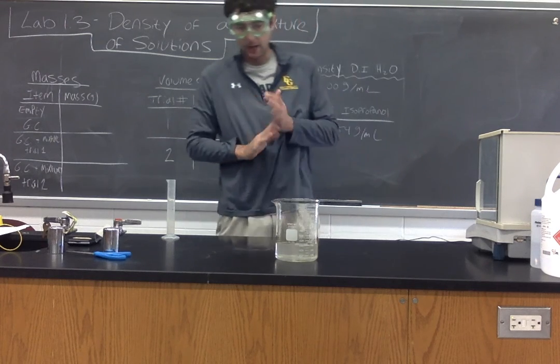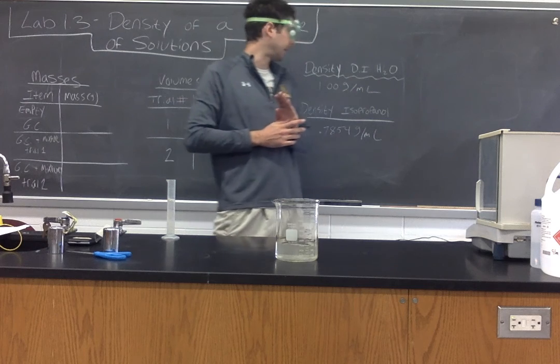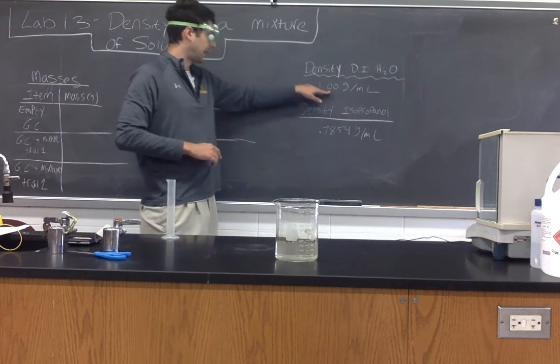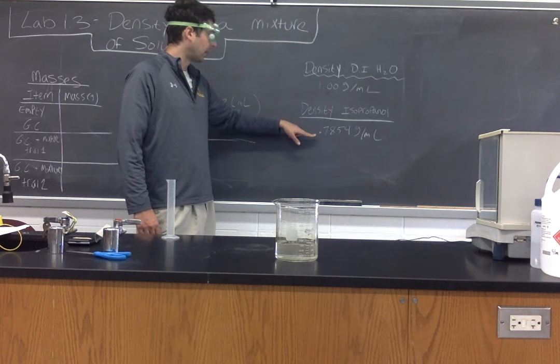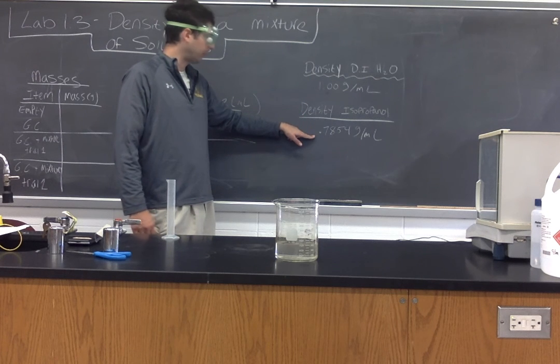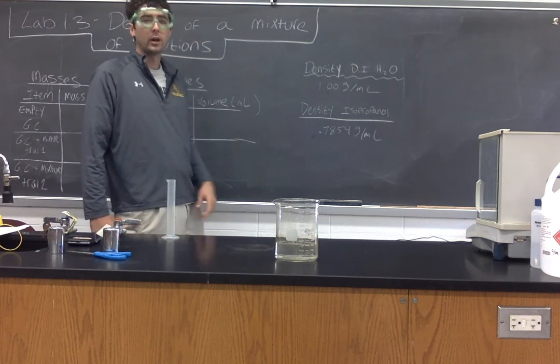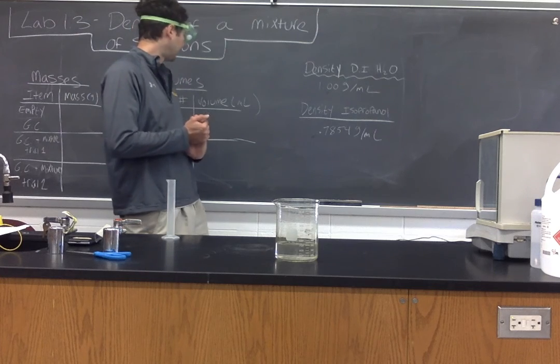Now before we get started, a couple of things to take note of. The density of our deionized water is one gram per milliliter, and the density of our isopropyl alcohol or isopropanol is 0.7854 grams per milliliter.